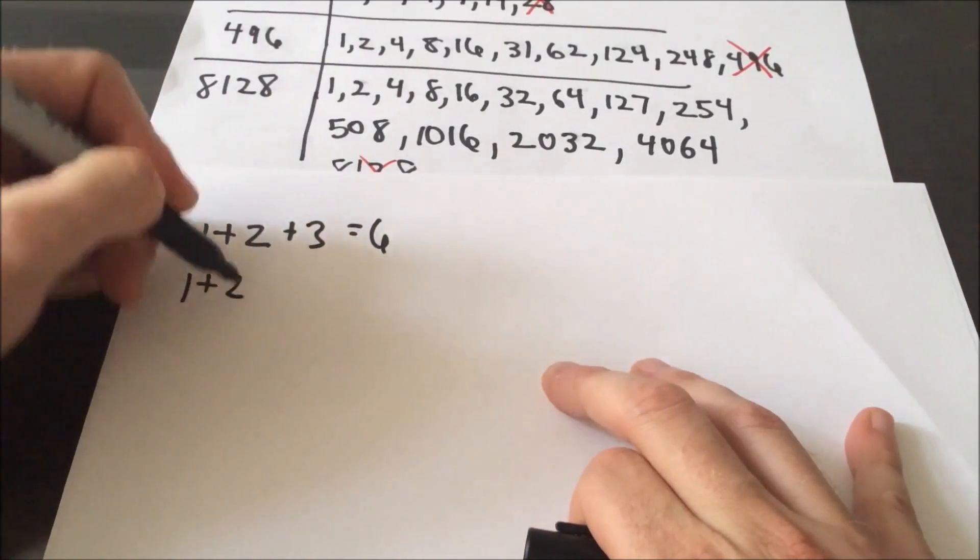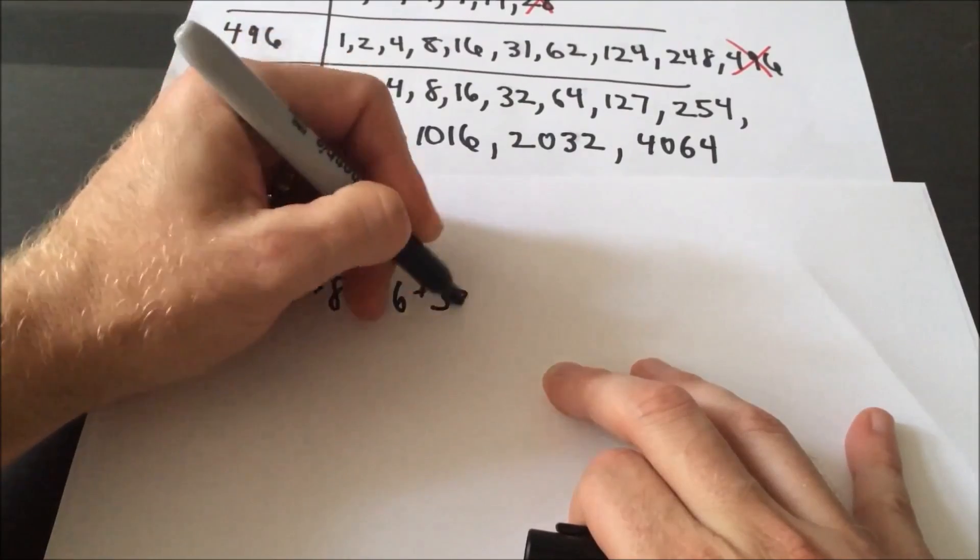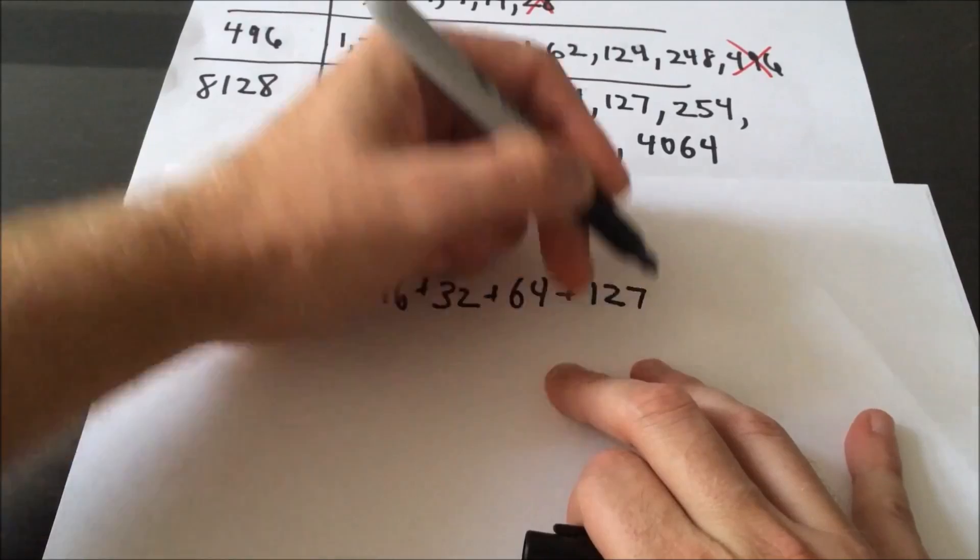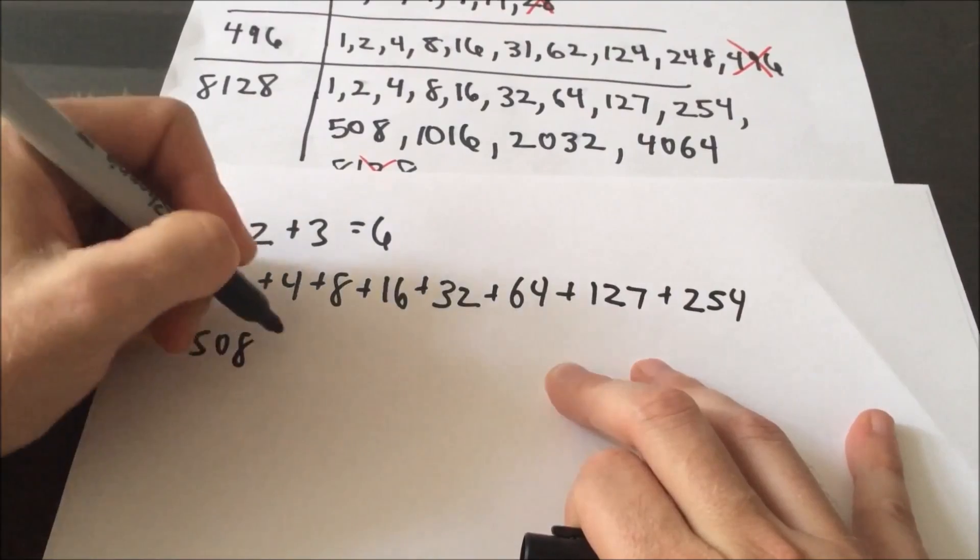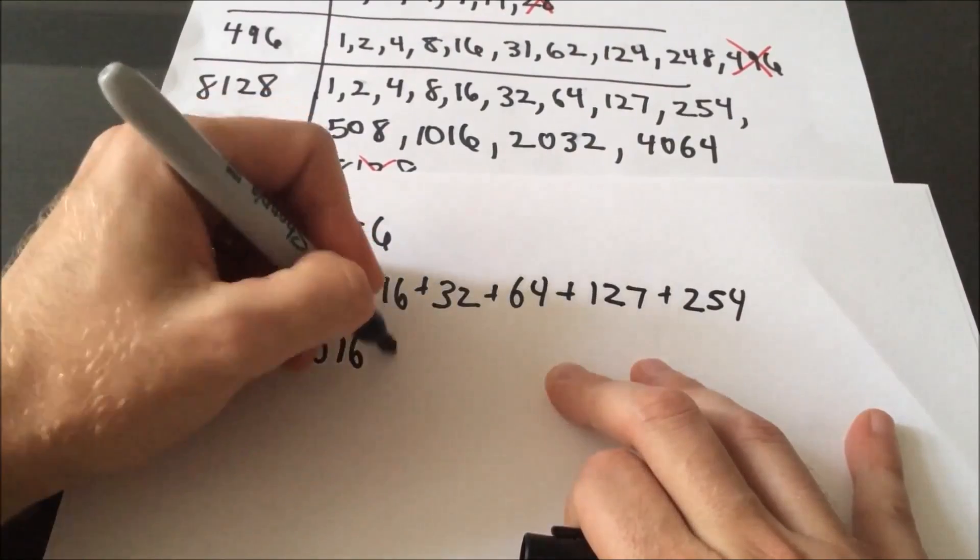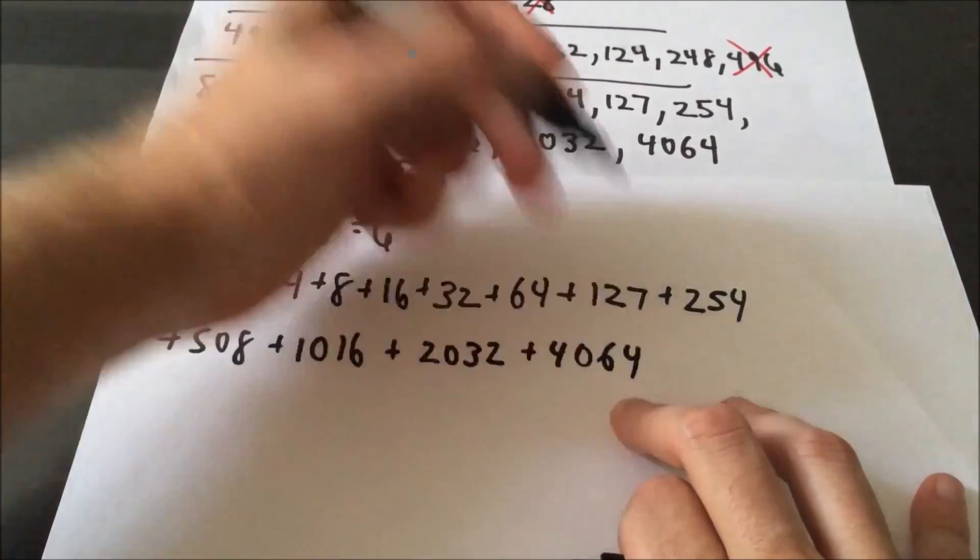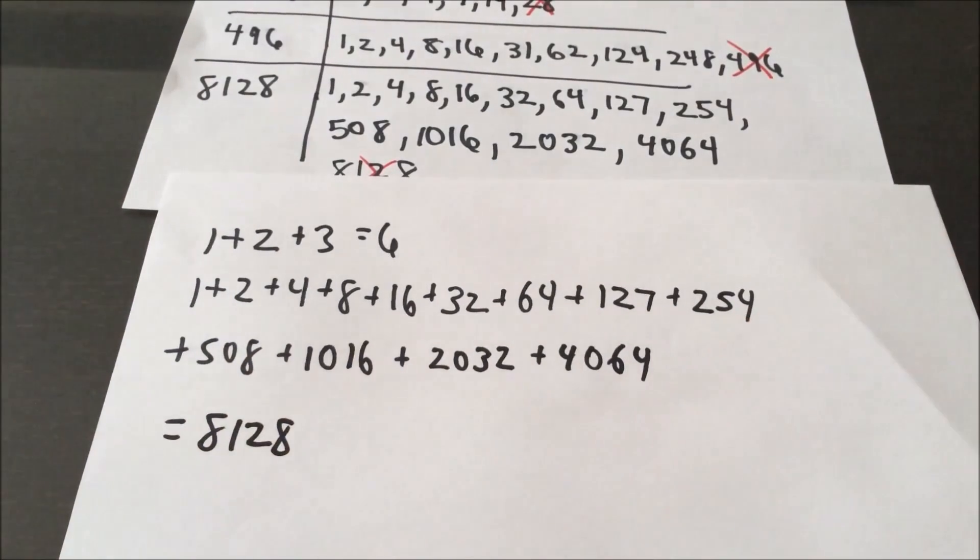1 plus 2 plus 4 plus 8 plus 16 plus 32 plus 64 plus 127 plus 254 plus 508 plus 1016 plus 2032 plus 4064, you do in fact get 8,128. So I think that's pretty cool, the way that the factors add up to the number itself. So it's in that sense that the number is perfect.